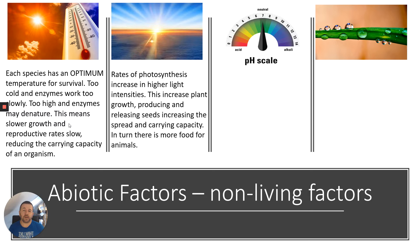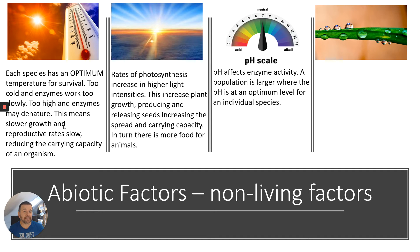Light particularly affects plants because rates of photosynthesis increase with higher light intensity, increasing plant growth, producing and releasing seeds, and increasing the carrying capacity as plants spread and increase their population. In turn, that produces more food for animals in food chains. pH is also important because it affects enzyme activity — a population is larger where pH is at an optimum level. Certain plants prefer alkaline soils, others prefer acidic soils, which limits the growth of certain species in certain environments.